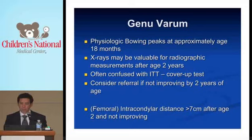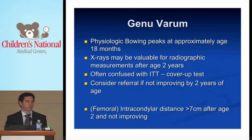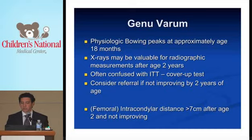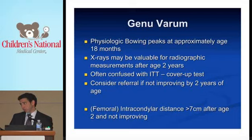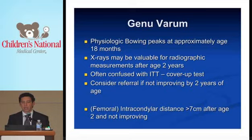Let's talk about coronal plane deformity — genuvarum. Physiologic bowing peaks at approximately age 18 months. The problem is the child looks worse between age 12 and 18 months, and parents say it's getting worse. As long as it starts improving by age two years, it's normal. X-rays may be valuable for further evaluation after age two, but typically not before that. Genuvarum is often confused with internal tibial torsion. Cover up the lower portion of the leg and foot and look at whether the knee is pointed forward. If it still looks bowed, it's more likely physiologic genuvarum or Blount's disease. If the leg looks straight when covered, it's probably due to internal tibial torsion.